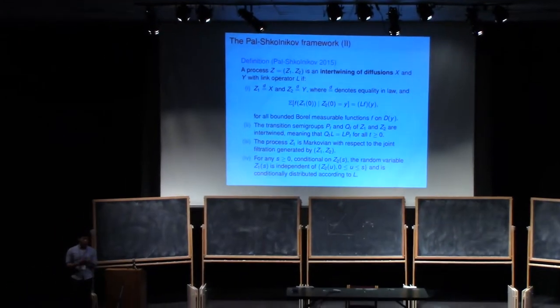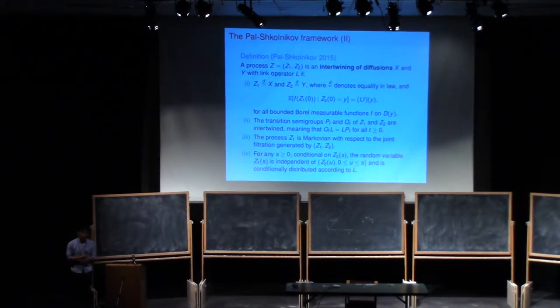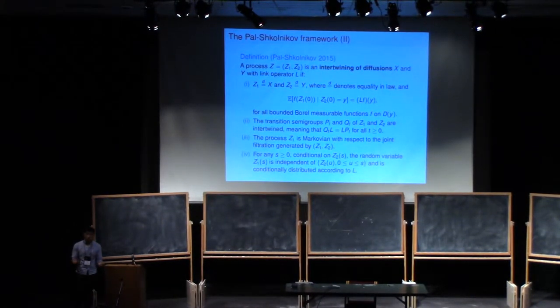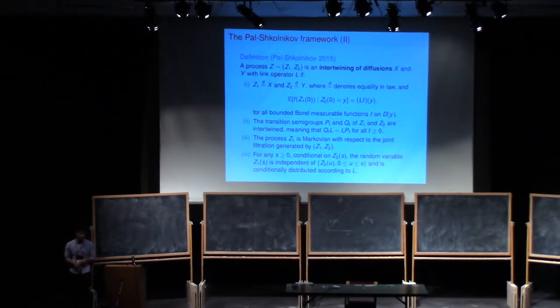The second thing I want is that it actually provides a coupling. So that's property two, which is just the condition for two Markov processes to be coupled.